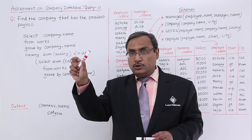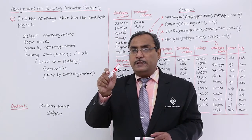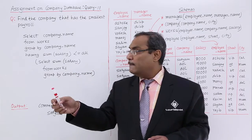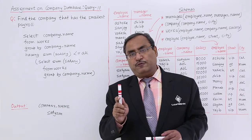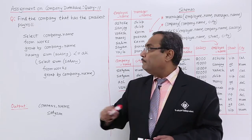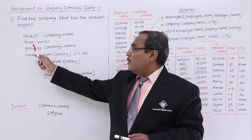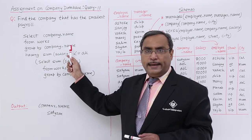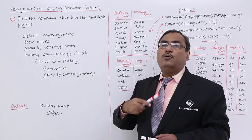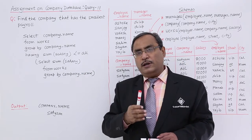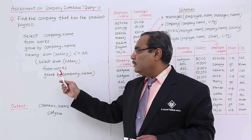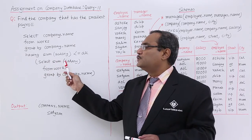So it will produce three values — for three companies, the respective sum of the salaries, that is the respective payrolls. Now I need to find out against which company name the minimum sum of salary occurs. The outer query is: SELECT company_name FROM works GROUP BY company_name HAVING SUM(salary) <= ALL. This approach is used because nesting aggregate functions like MIN(SUM(salary)) is not always allowed.